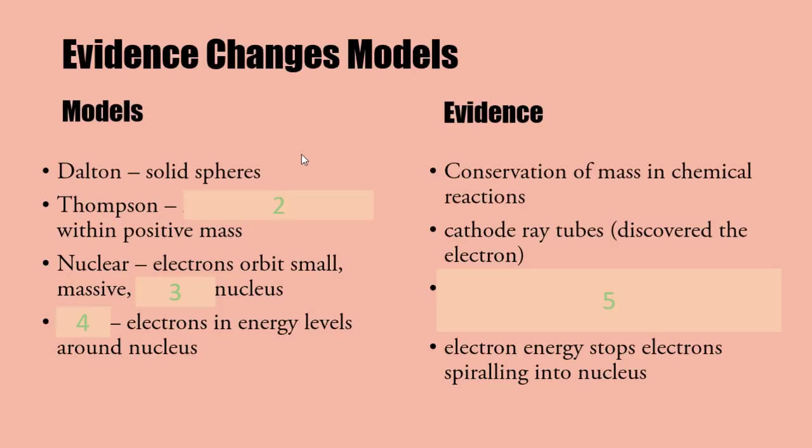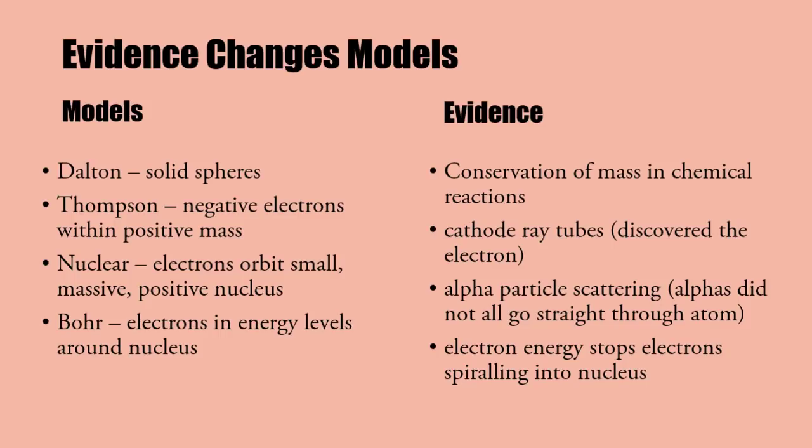Dalton's model - evidence changes models. Dalton was about atoms being solid spheres. Thompson is the plum pudding model - negative electrons within a positive mass. Rutherford's model is the nuclear model - negative electrons orbiting a positive nucleus. Lastly, Bohr model explains why electrons stay there because they're in energy levels. The evidence for Dalton was conservation of mass. Thompson's evidence was cathode ray tubes and Rutherford's evidence was alpha particle scattering.